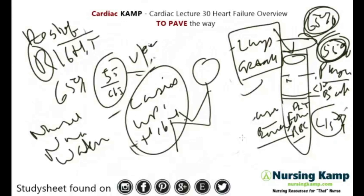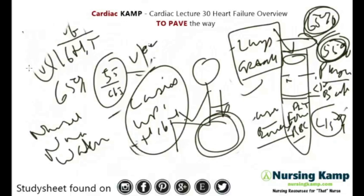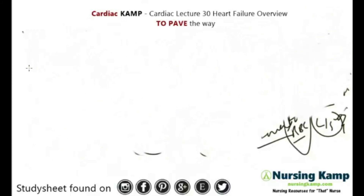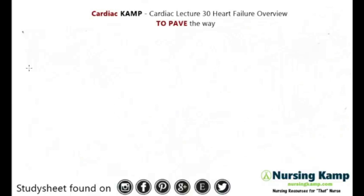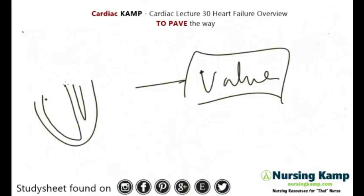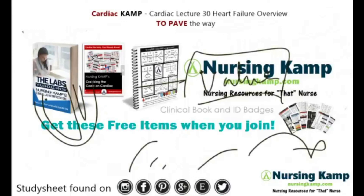That's the general overview — it's all about fluid. When you're looking at CHF, it's either an exacerbation or not. The cause of CHF can be from many different causes — it could be an MI like we just talked about. In the next lecture, we're going to talk about valves causing heart failure and what that does to the heart with hypertrophy and cardiomyopathy. My name is Camp and this is nursing camp — nurse on, we'll see you next time.